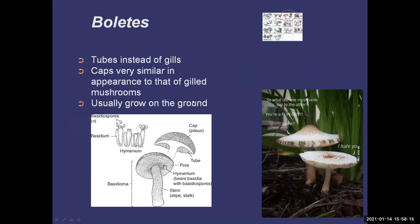Here's another family of mushrooms called boletes — one of my favorites. There are hundreds in this family, which can be frustrating for ID, but there are some simple ones. They have caps very similar to gilled mushrooms — a variety of colors and textures — but they don't have gills. They have tubes, and they usually grow from the ground, not from trees.